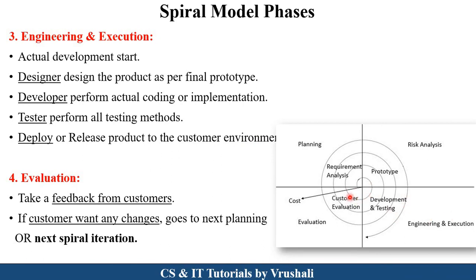After deployment, it moves to the fourth part — customer evaluation. They take feedback from the customer, and if the customer wants any changes, it moves to the next spiral iteration — again planning, again risk analysis, again engineering and execution, and again evaluation. If the customer still has suggestions or needs, they move through planning, risk analysis, engineering, and evaluation again. The more spiral iterations there are, the higher the project cost. If after one iteration the customer is satisfied and wants no changes, the project cost is lower.